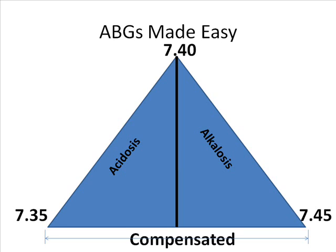The normal range for pH is 7.35 to 7.45. As long as we're within that range, we are compensated.